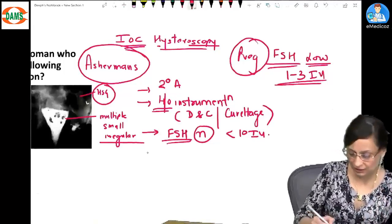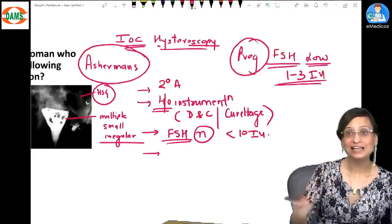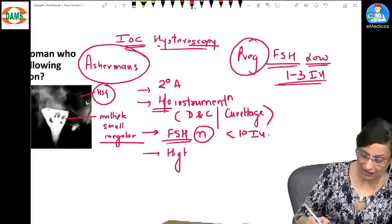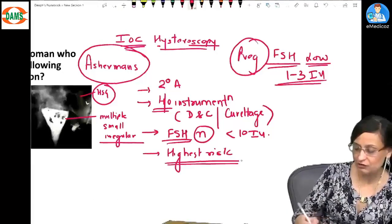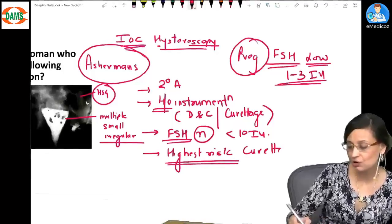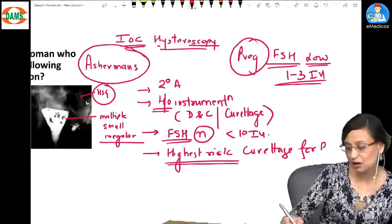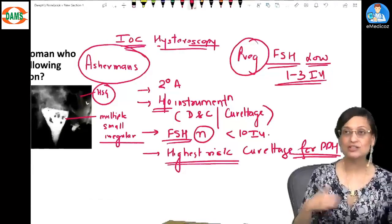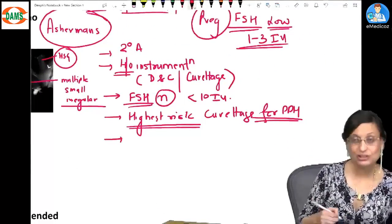Third important thing we could ask you: highest risk. So when we ask you highest risk, you know that is if you do a curettage for postpartum hemorrhage, then the risk of Asherman's is highest.